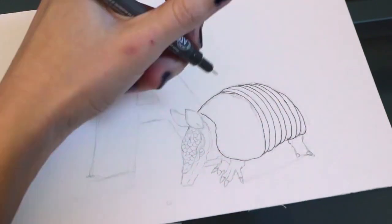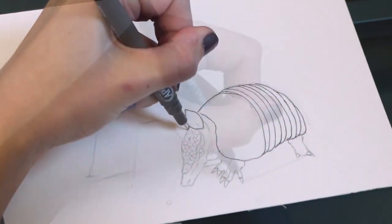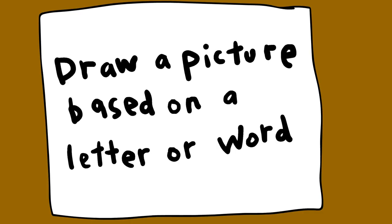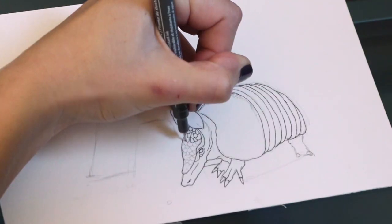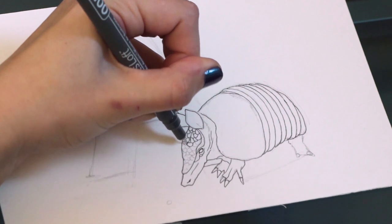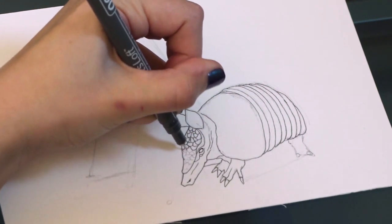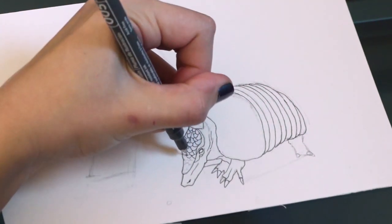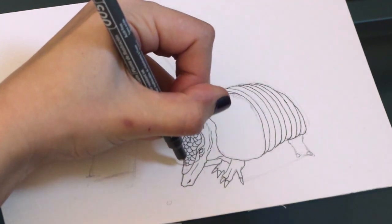Another way to combine words and drawings is to draw a picture based on a letter or word. Here is a picture of an armadillo I drew next to the letter A.